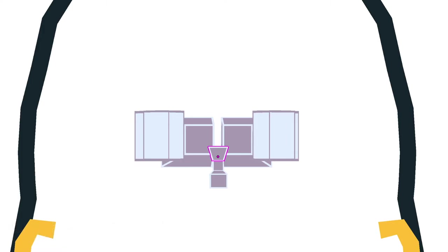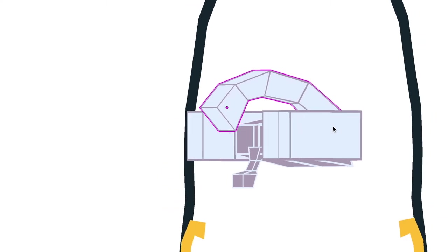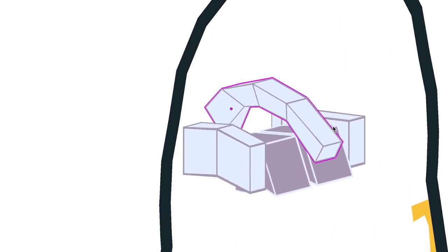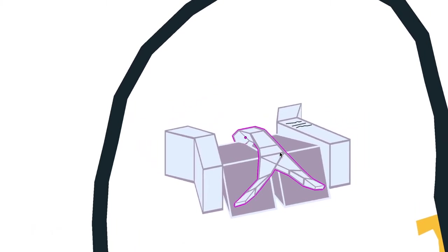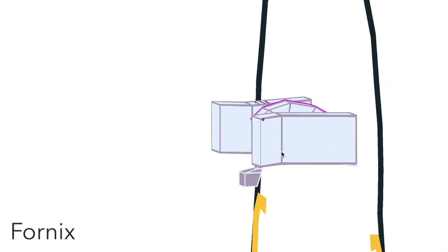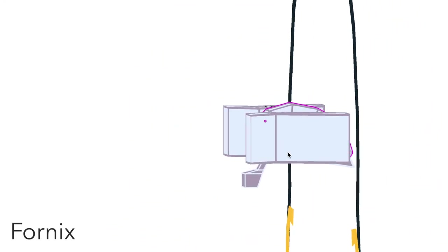Moving above the thalamus now, we see this arch of white matter connecting either side of the brain. This is called the corpus callosum. Beneath it is another arch which wraps more tightly around the thalamus called the fornix. Fornix is literally Latin for arch.